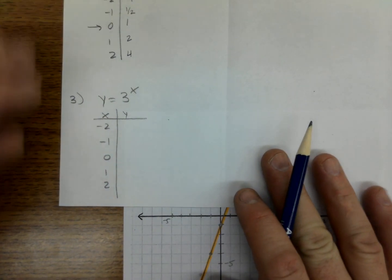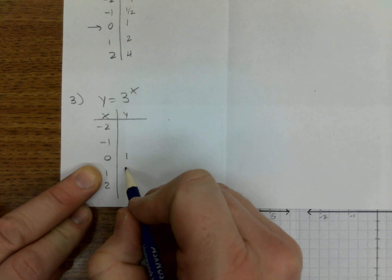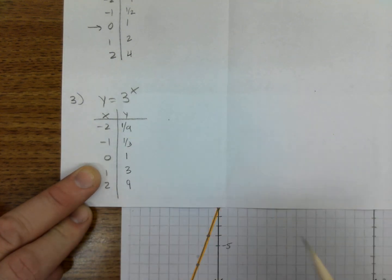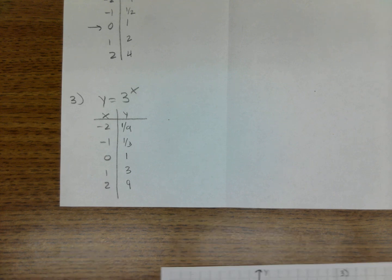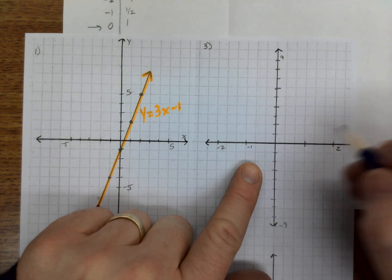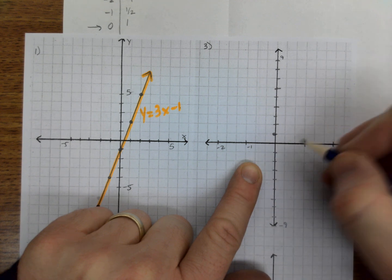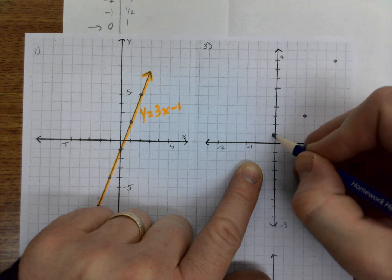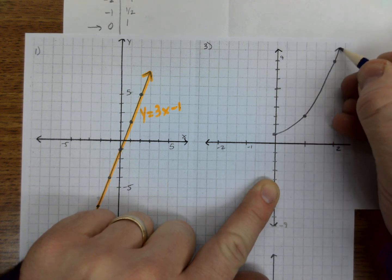3 to the x. Plug these in. This is 1, 3, 9, 1 third, 1 ninth. All right, if we go ahead and graph those, let's see here. 0 would have been 1, 1 would have been 3, 2 would have been 9. And again, it's curved up.